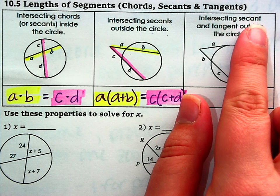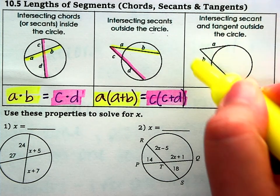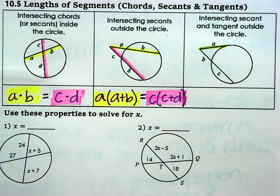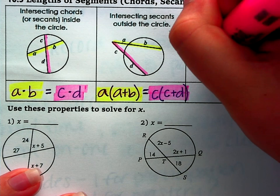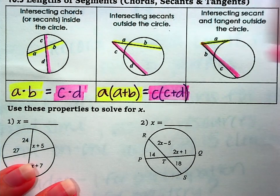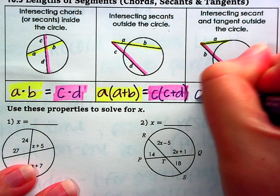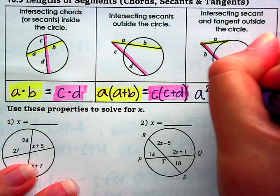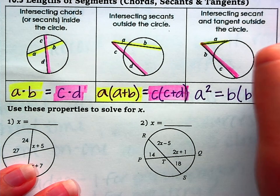Alright, the last scenario, intersecting secant and tangent outside the circle. So now we have a tangent line that just hits the circle on one spot. So all we have for that yellow line is A, and then we have another secant. Now B and C are on this secant. So it's kind of similar. For the tangent, however, we're just going to square whatever that is. So we'll have A squared equal to B times B plus C.